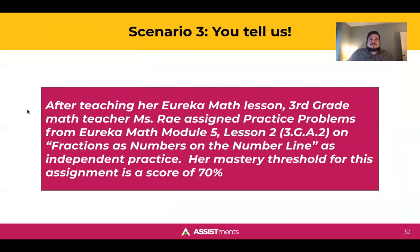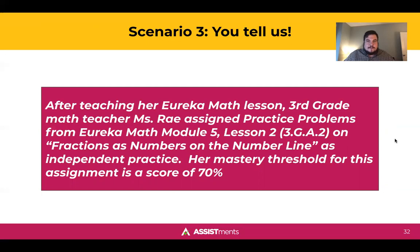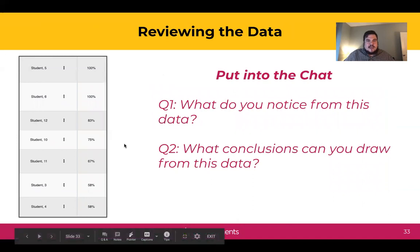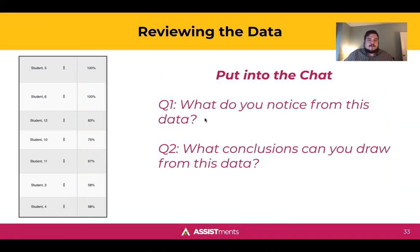Scenario three: after teaching her Eureka Math lesson, third grade math teacher Ms. Ray assigned practice problems from Eureka Math module five, lesson two on fractions as numbers on the number line, as independent practice. Her mastery threshold for this assignment is a score of 70%. Take a look at the snapshot of her data — in the chat, please share what you notice from this data and what conclusions you can draw.